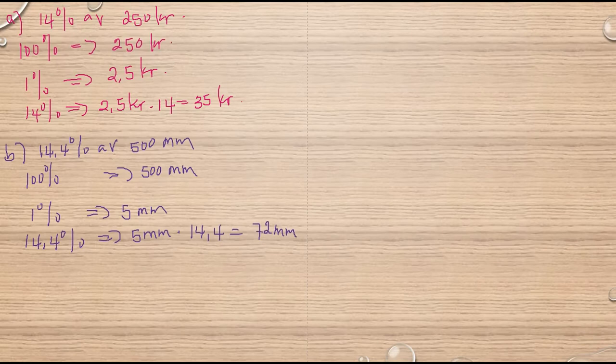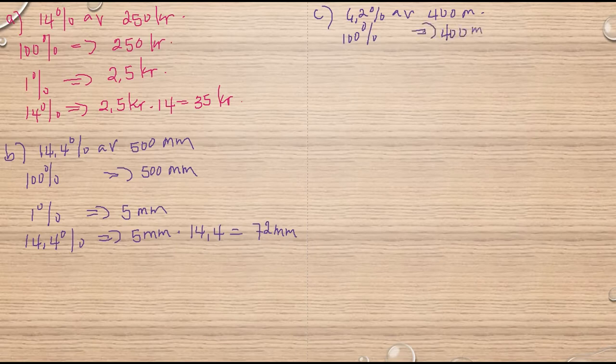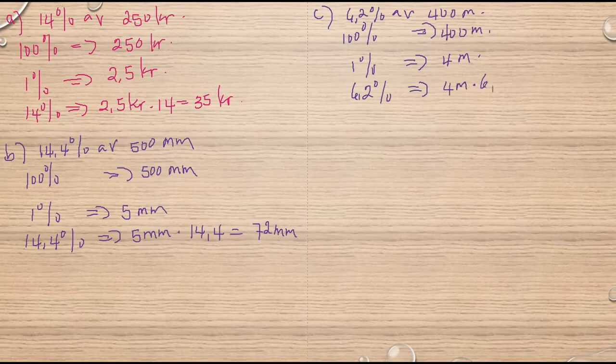Titta på C. 6.2% av 400 meter. Så har vi 100% motsvarar 400 meter. 1% motsvarar 4 meter. Så 6.2% motsvarar 4 meter multiplisar 6.2. 4 multiplisar 6.2, då har vi 24.8 meter, exakt samma som vi fick innan.